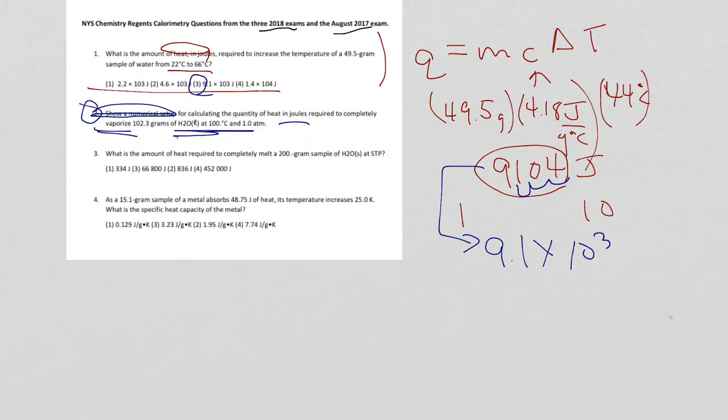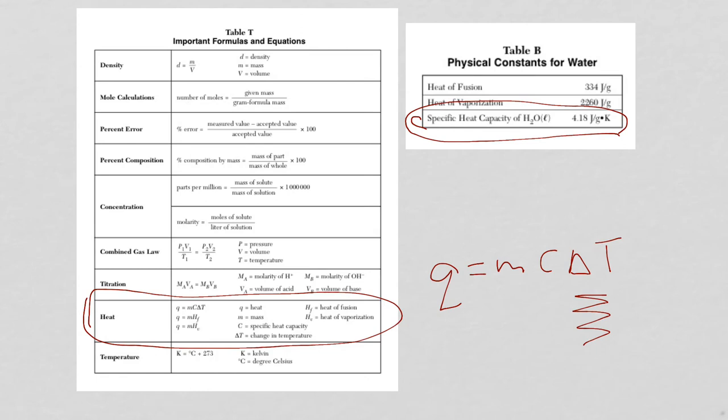I go back to my Q equations because they're my heat equations. And now I'm talking about, let me go back for a minute, it's talking about vaporize. So the one that's going to fit is this one here, Q is equal to mHV, heat of vaporization. Not only do I need that equation, but now let's erase this. We need heat of vaporization for water, which is 2260 joules per gram.